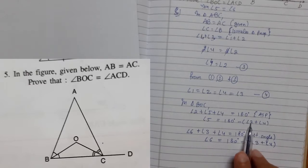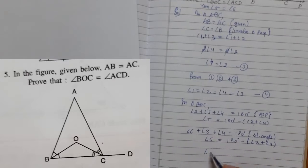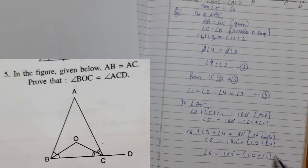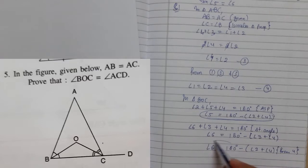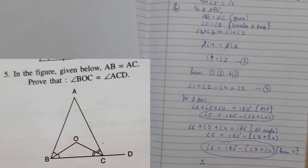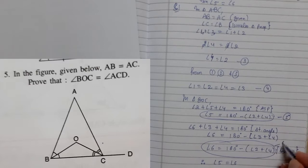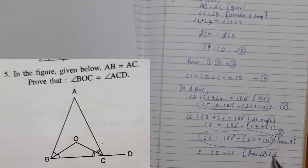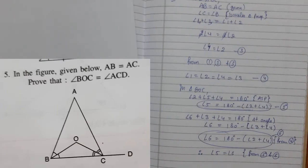Now look — for angle 5 we have 180 minus angle 2 plus angle 4, and for angle 6 we have 180 minus angle 3 plus angle 4. Since we know from equation 4 that all four angles are equal, angle 3 equals angle 2. So we can also write angle 6 as 180 minus angle 2 plus angle 4. Since both angle 5 and angle 6 have the same value, therefore angle 5 equals angle 6. Hence proved. Hopefully you understood the concept — see you in the next video, thank you for watching.